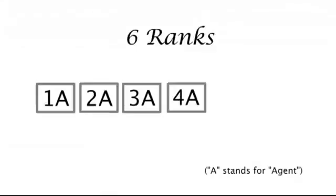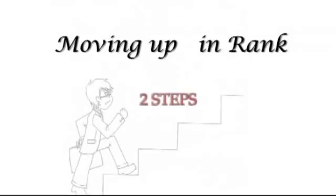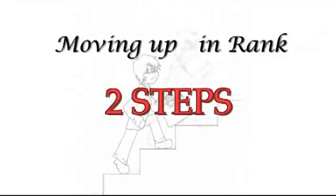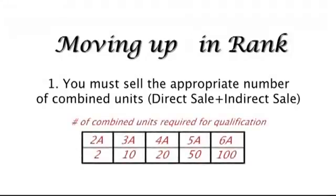There are six ranks within the eight-point commission structure. In order to move up in rank, there are two steps you need to take. First, you must sell the appropriate number of combined units, which are the total number of direct and indirect sales completed. Once the required combined units sold have been reached, you are immediately qualified to move up the rank.